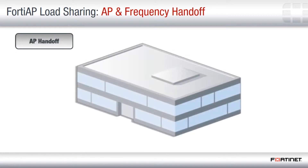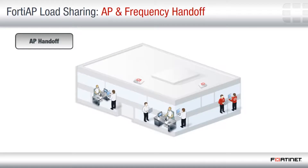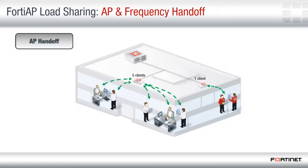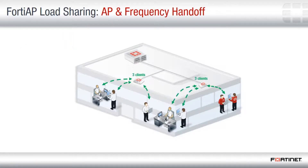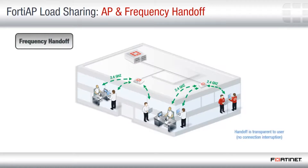Access Point Handoff performs load balancing by selectively associating users with available wireless access points. Frequency Handoff Optimization assigns clients capable of using 5 GHz wireless to available higher frequency connections.